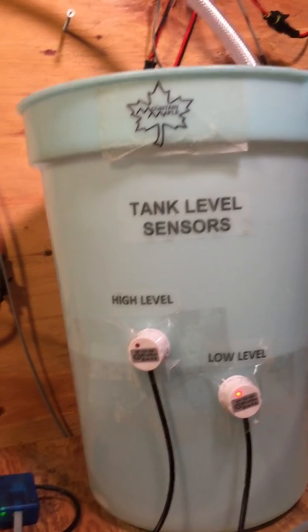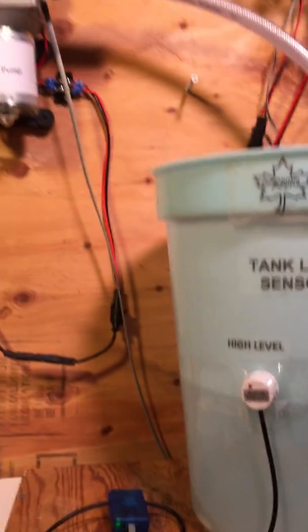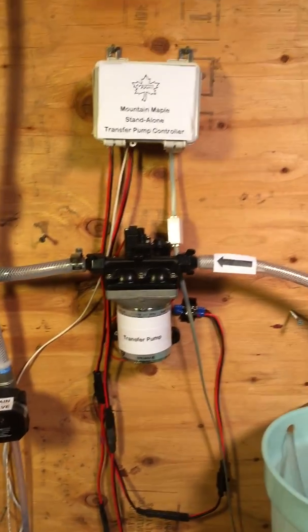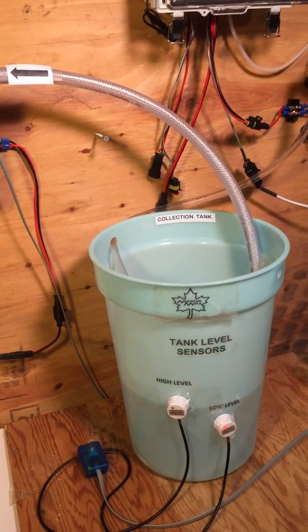We have a low level with a light on there. We've got an upper level. And so what this standalone controller is going to do is it's going to look at the sensors and when the sap gets above the upper level, we're going to be pumping sap out.